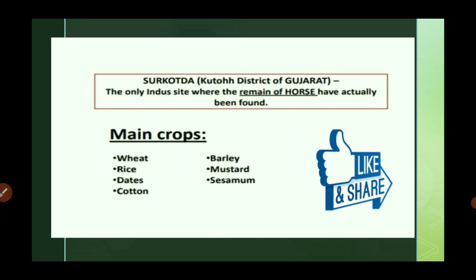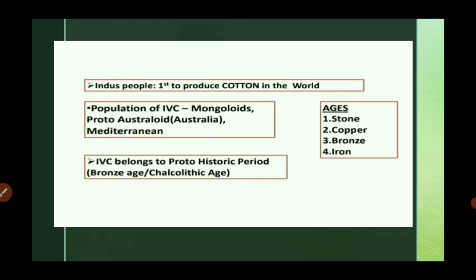Surkotada in the Kutch district of Gujarat is the only site where remains of horse have actually been found. The major crops of the Indus Valley Civilization include wheat, rice, seeds, cotton, barley, mustard, and sesame. Importantly, these people were the first to produce cotton in the world.